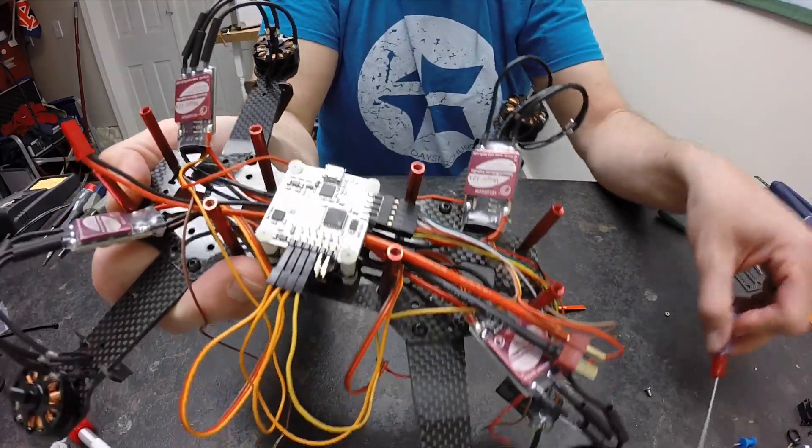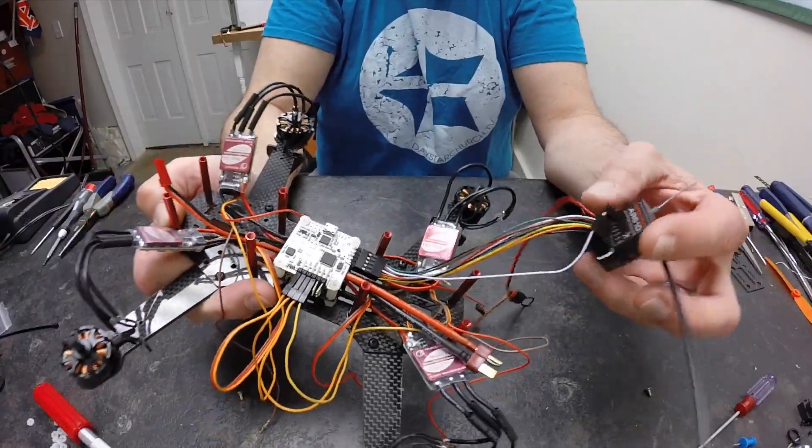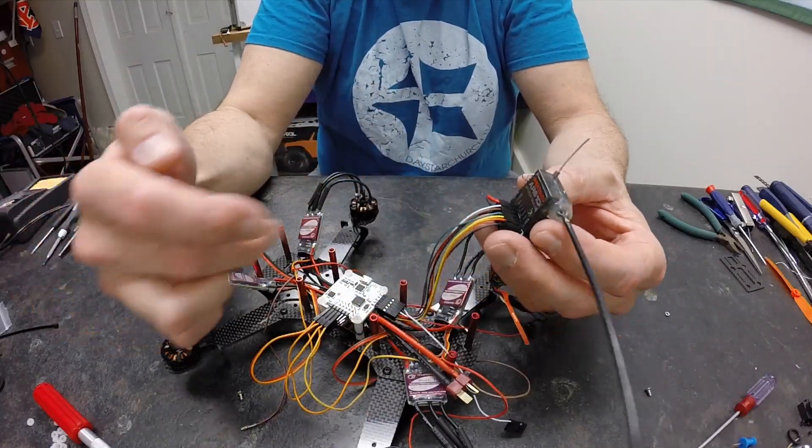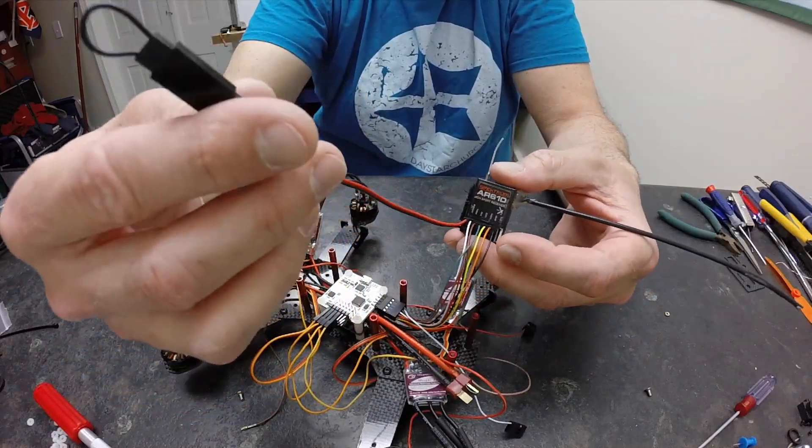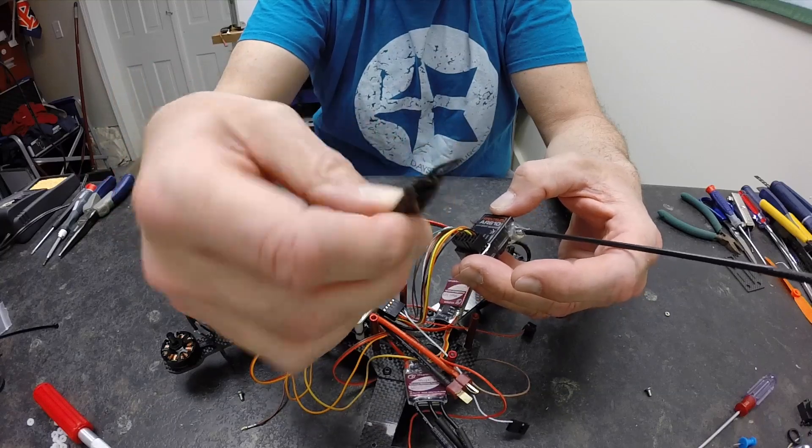So what we've done is very quickly by use of the breakout cable plugged our receiver in, and now all we have to do is bind. But this is just a bind extension and makes it a little easier to bind for accessibility. And after we get this bound up, then we're going to test the rotation of our motors.